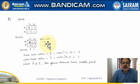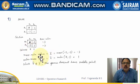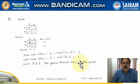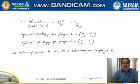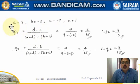Now we'll solve the two by two game written in the form a, b, c, d. First we check whether a saddle point exists by finding the minimum in each row and maximum in each column, then checking whether maximin equals minimax. Here maximin is not equal to minimax, so the game has no saddle point. We then apply the formula using values a, b, c, and d to find probabilities p and q.